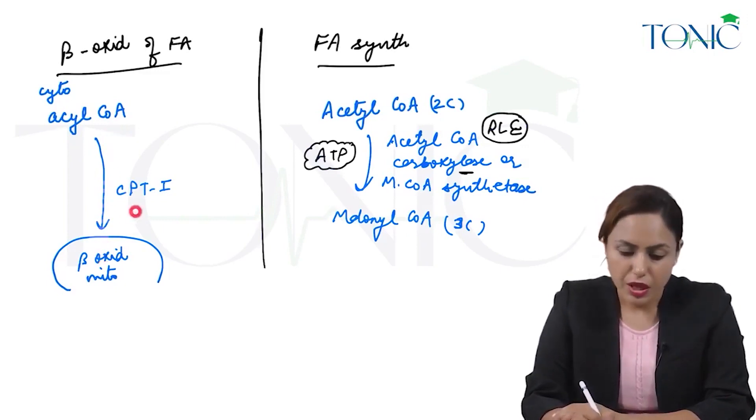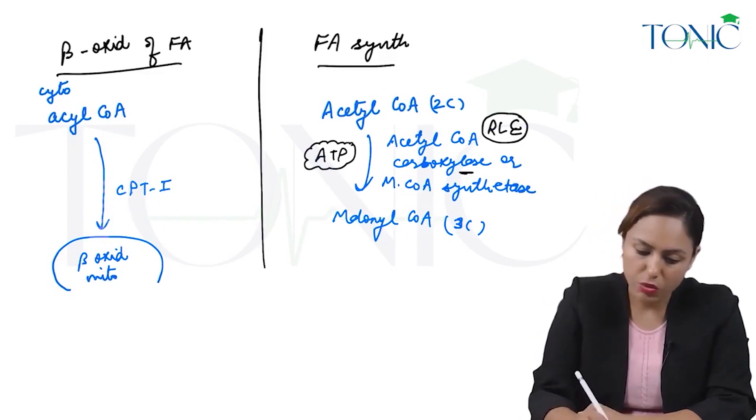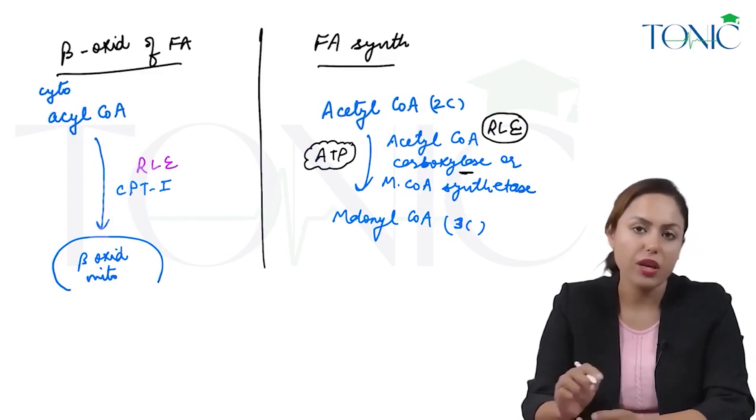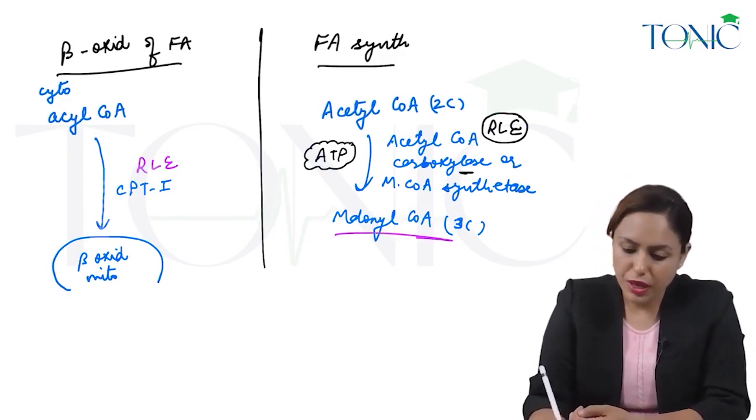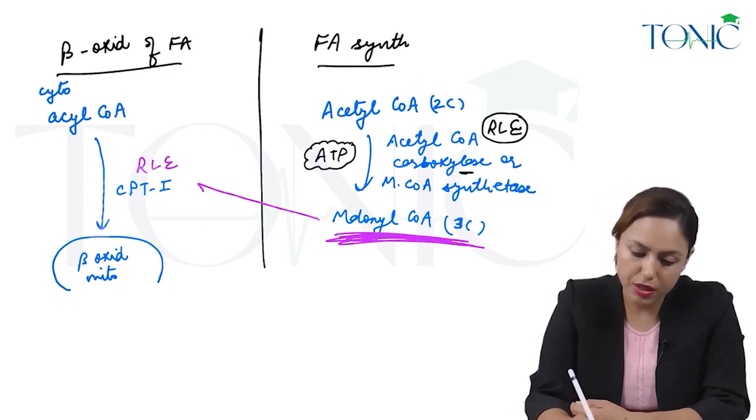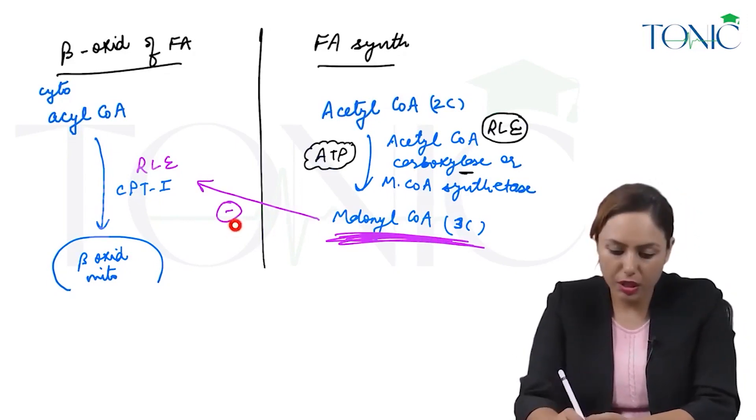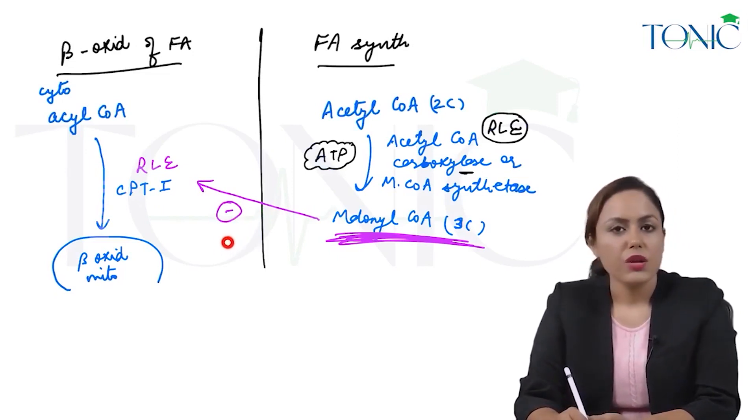And this enzyme CPT1 is the rate limiting enzyme of beta oxidation. We know that this malonyl CoA, which is a three carbon compound, is the inhibitor of CPT1. So this inhibition helps in reciprocal regulation.